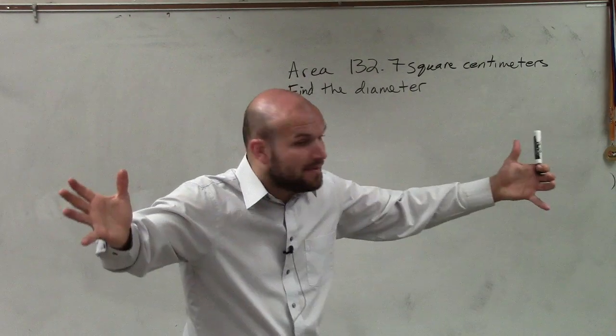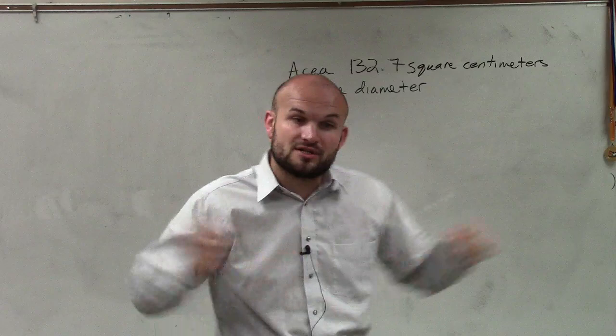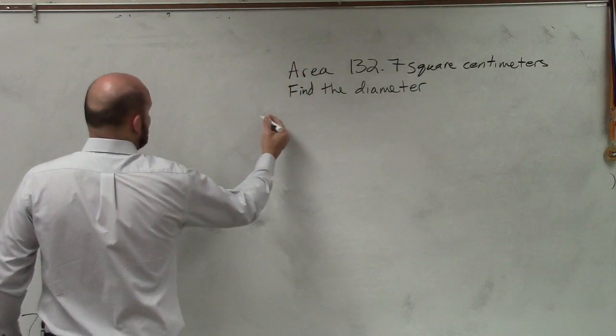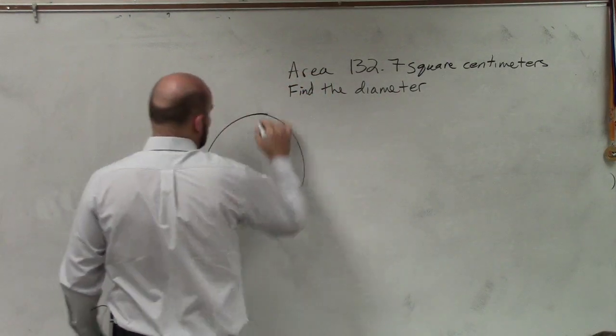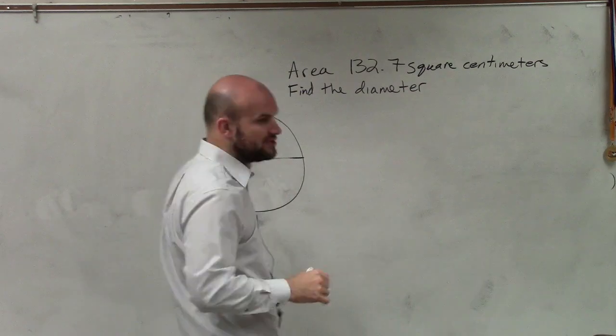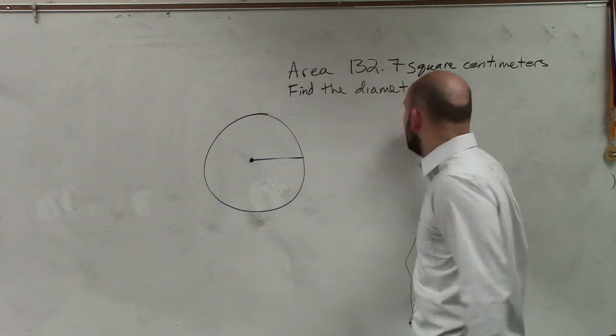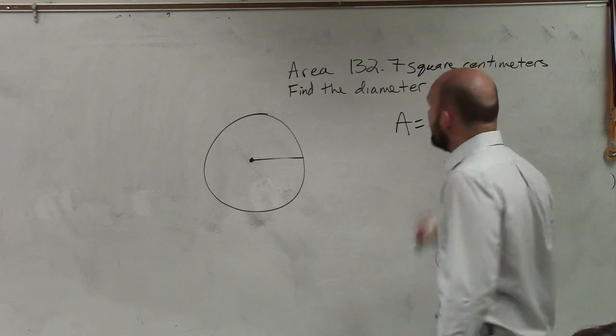The first thing I mentioned, which I saw a lot of students already had, was a figure of a circle. So please, when you're getting stuck, draw a picture of a circle. And then let's write the formula: Area equals pi r squared.